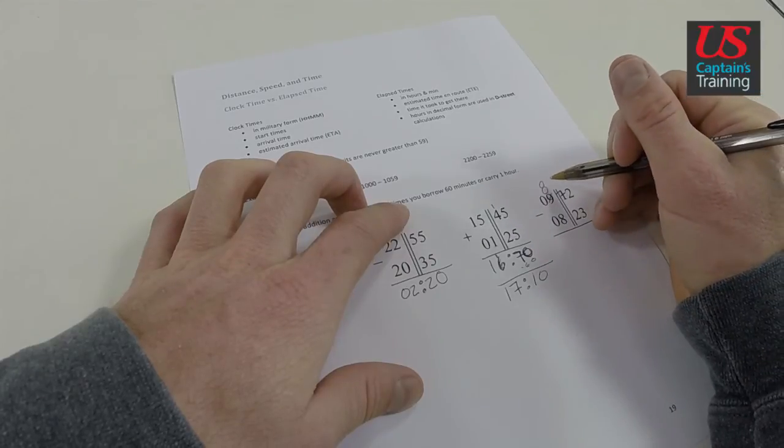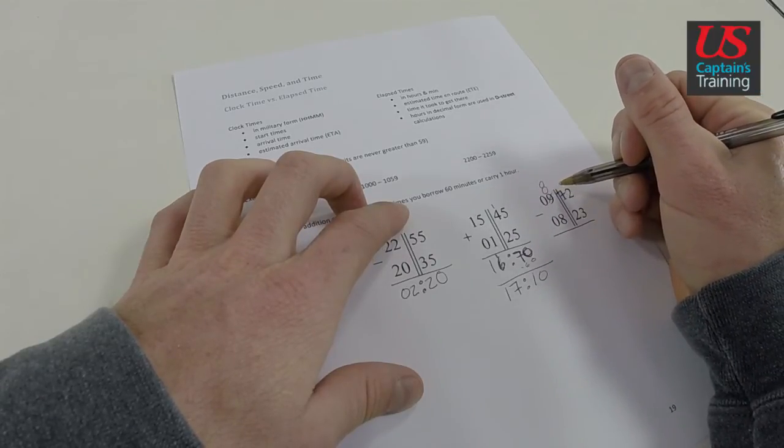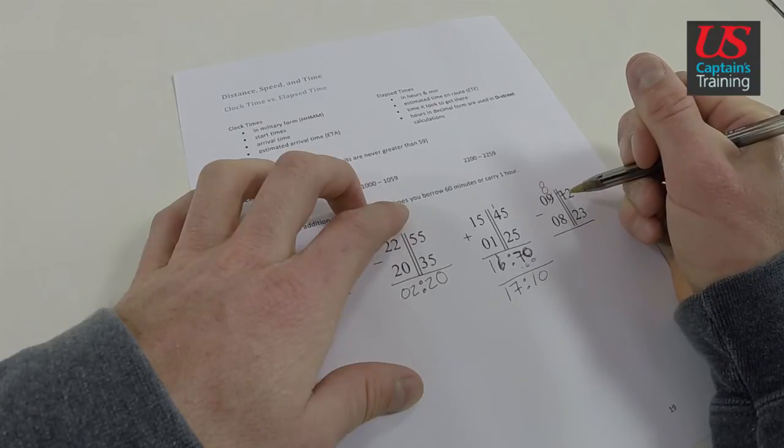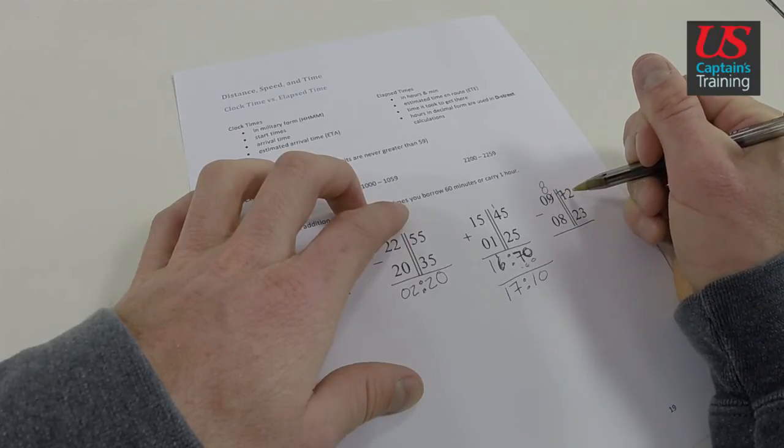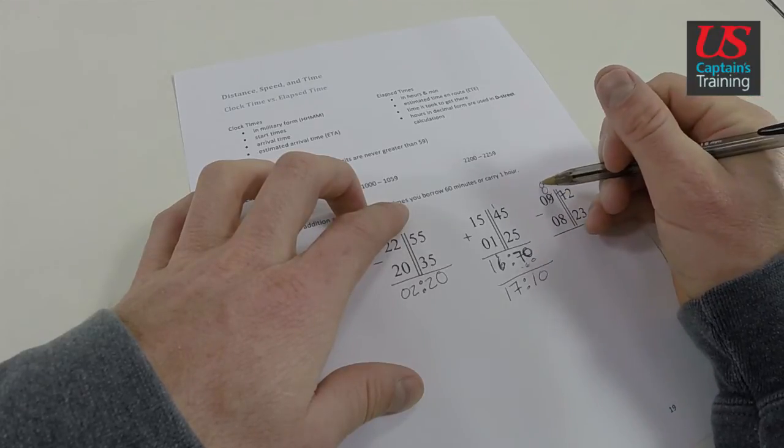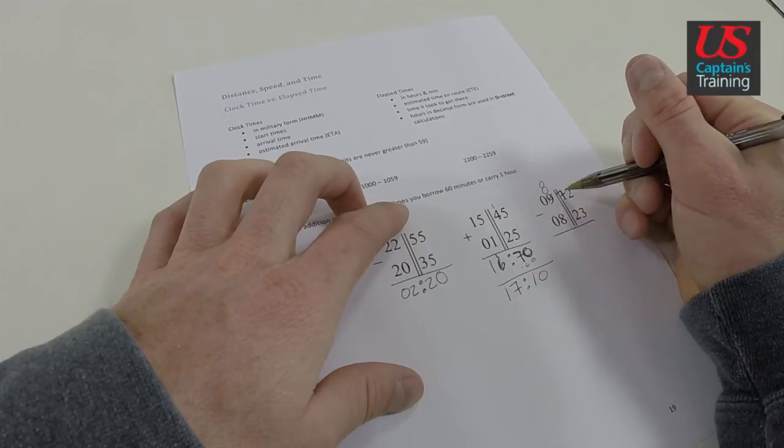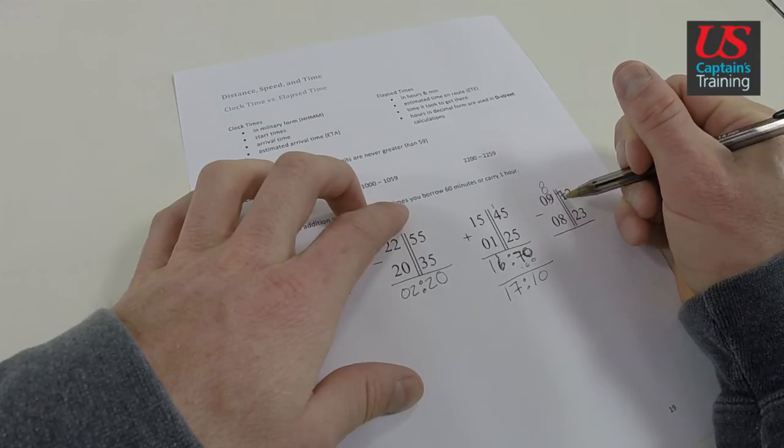So it turns this 12 into a 72. Because we went, we took one hour, which is 60 minutes. We added to 12. Now we're left with 72 instead of 12. Right? We have an 8 here instead of a 9. Added 60 to the 12. Became 72.